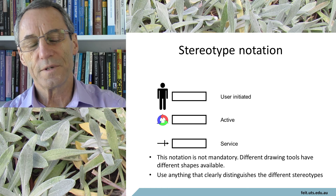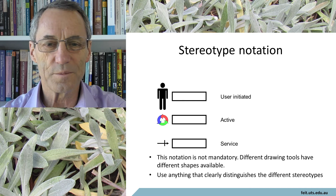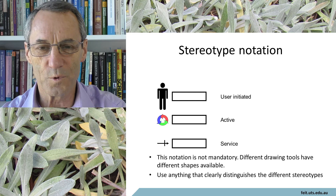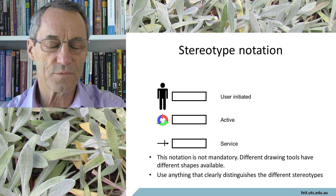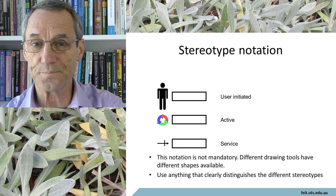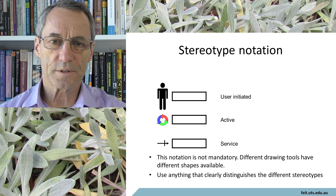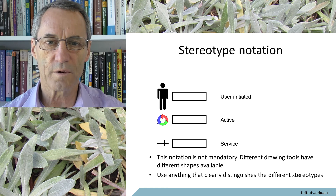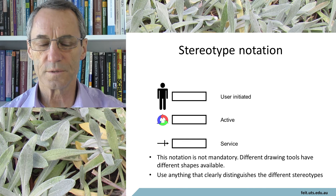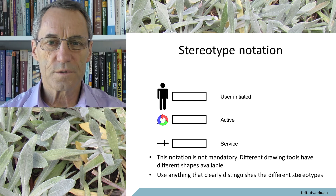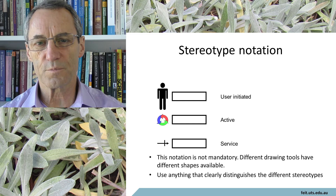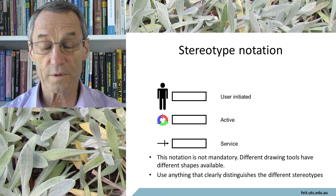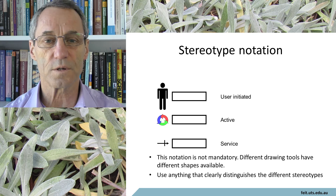The notation? Well, pretty obviously, if something is initiated by a user, it's quite normal to indicate this with some sort of a stick figure human attached to that component. Anything that's active would have a circle — usually with an arrow to indicate continuous motion. And a service — well, the symbol used is an arrow with a cross on it, but there doesn't seem to be anything that naturally fits it. Different documentation tools have different symbols available, so don't get hung up on these particular ones. Use whatever is available and indicates a distinction between these types of systems.